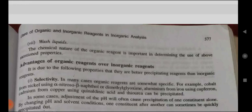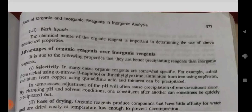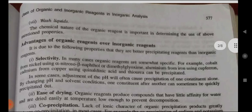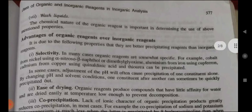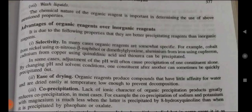Advantages of organic reagents over inorganic reagents: First, selectivity — in many cases organic reagents are somewhat specific. For example, cobalt from nickel using alpha-nitroso-beta-naphthol or dimethylglyoxime; aluminum from iron using cupferron; cadmium from copper using quinolinic acid and thiourea. In some cases, adjustment of pH will often allow precipitation of one ion alone, and by changing pH and solvent conditions one constituent after another can sometimes be successively precipitated out.